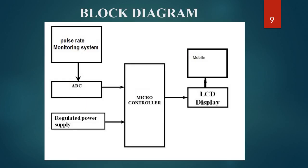The next point is the block diagram. The pulse rate monitoring system is connected to the ADC. The ADC is connected to the microcontroller, and a regular power supply is connected to the microcontroller. The microcontroller processes the tasks and displays the output to the LCD display. The LCD display is connected to the mobile phone, which sends the output through GSM via SMS to the patient's relatives and doctor.